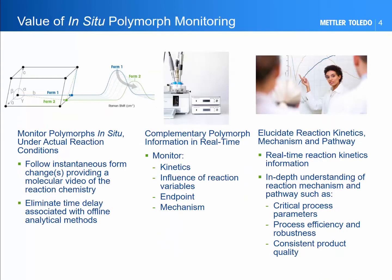The study of polymorphs has quite an important role in high-value chemical development, as it's necessary to understand the effectiveness of the chemical entity. In the case of a polymorph change in a reaction, the key is to understand how and why such changes occur. The use of in-situ Raman is one of a number of techniques used to study polymorph crystallization. By using an in-situ technique, you're able to follow instantaneous form changes without the loss of data that can occur with offline techniques.